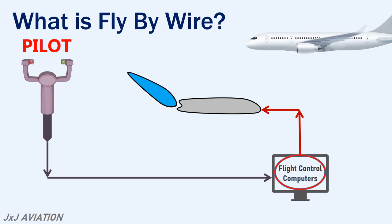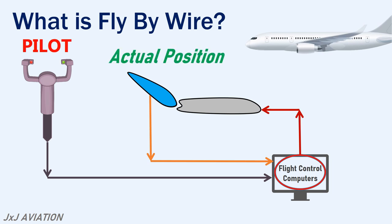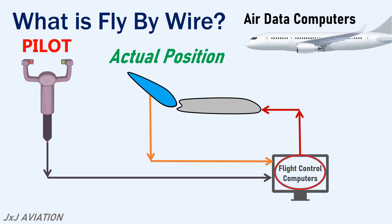After the control surface is deflected, the computer receives a feedback signal from the control surface. The computer now has information on the actual position of the control surface. This is compared with the response of the aircraft, done by getting information from different air data computers which are connected to the aircraft's pitot and static tubes. This is extremely essential in flying the aircraft safely.